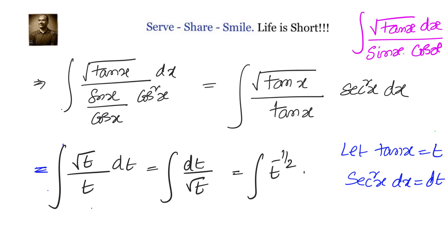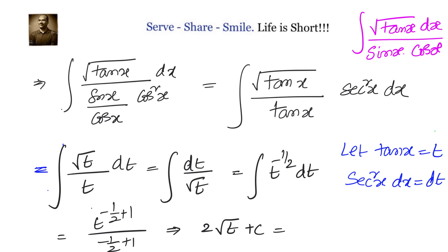We integrate t to the power of minus 1 by 2 dt using the formula: integral of x power n equals x power n plus 1 by n plus 1. This gives t power minus 1 by 2 plus 1 divided by minus 1 by 2 plus 1, which is t power 1 by 2 by 1 by 2, equaling 2 into root t plus C. Since t is tan x, the final answer is 2 into square root of tan x plus C.